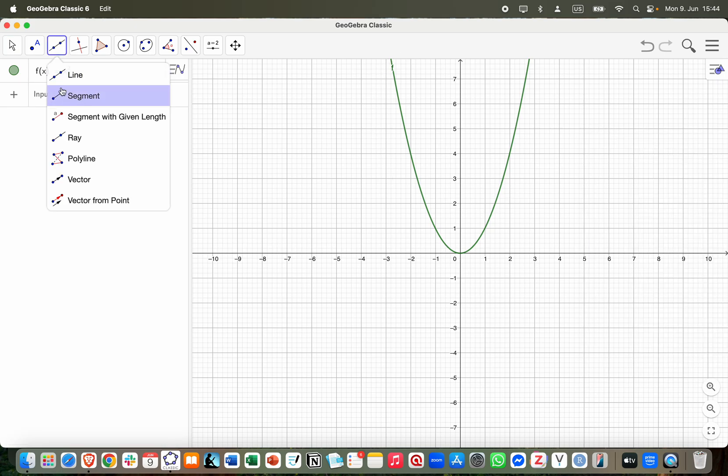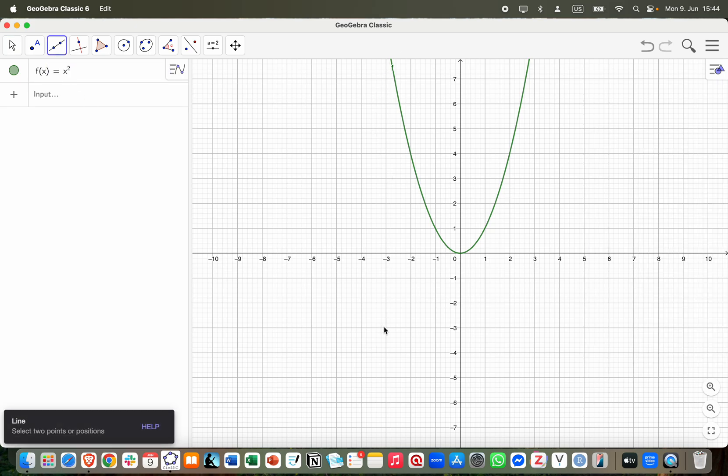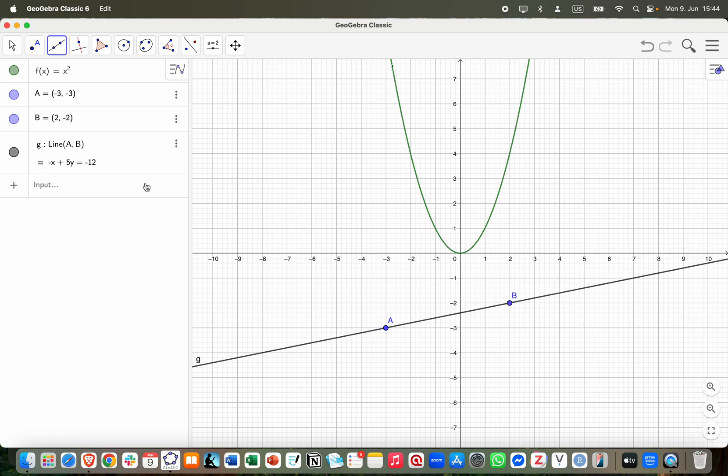This is the toolbar. So if I draw a line for example, I need two points. And then as you can see the properties of the objects here appear in the algebra view. We have the points a and b and their coordinates and also the line g and the equation. If I move the points you will see that the equation and the coordinates also change.